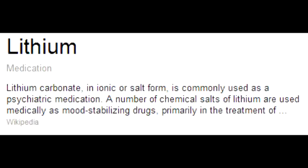Why does the side effect polyuria happen with lithium use? The reason polyuria happens with lithium use is because lithium is an antidiuretic hormone antagonist and this causes nephrogenic diabetes insipidus. Because this is an antidiuretic hormone antagonist, this leads to polyuria — blocking antidiuresis means more diuresis occurs.